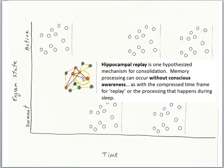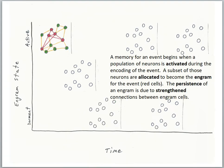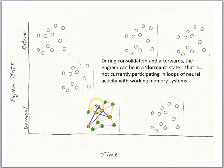The result of consolidation is the strengthening of connections between engram cells. During consolidation and afterwards, the engram can be in a dormant state — not currently participating in loops of neural activity with working memory systems. Here we see the yellow cells with strong blue connections as the engram for the event. In the dormant state, these cells have undergone strengthening but are not currently active. The yellow cells are the ones that constitute the engram for the event.